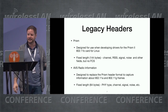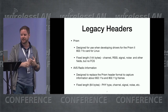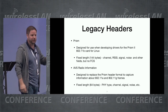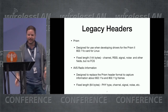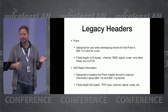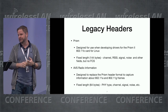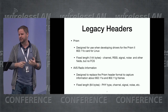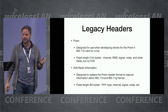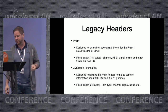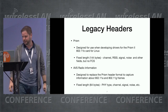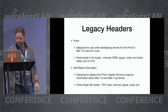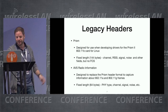About those legacy headers: they were designed for very old 802.11b and g networks. They had a fixed length and only a few fields like channel, signal strength, and noise. The prism header, for example, didn't have the FCS field, which was a limitation back then.